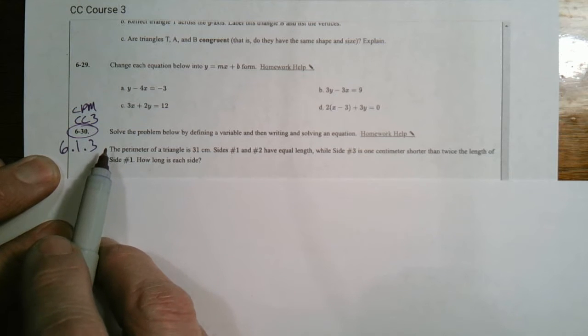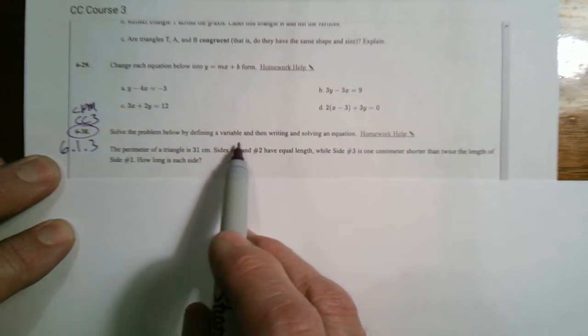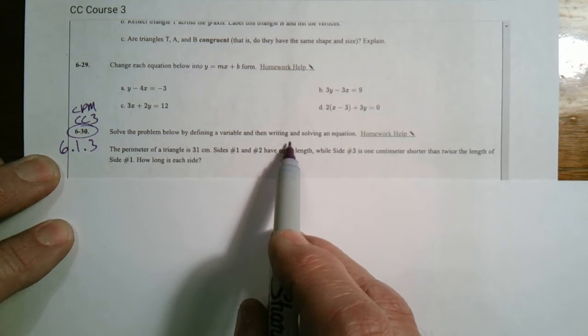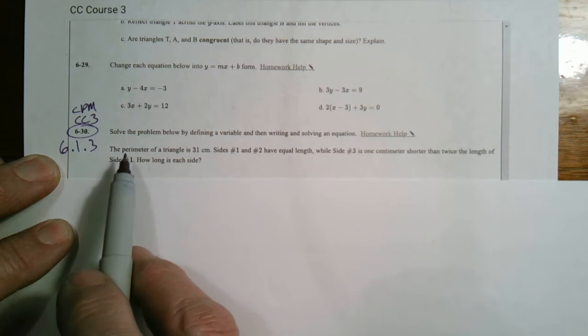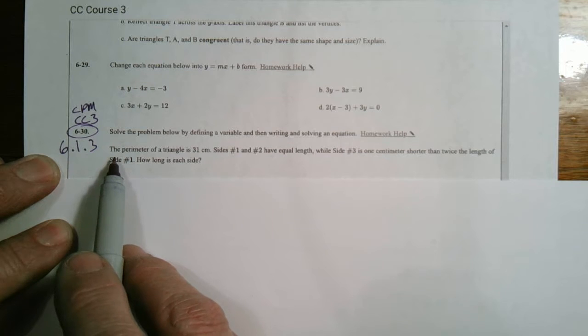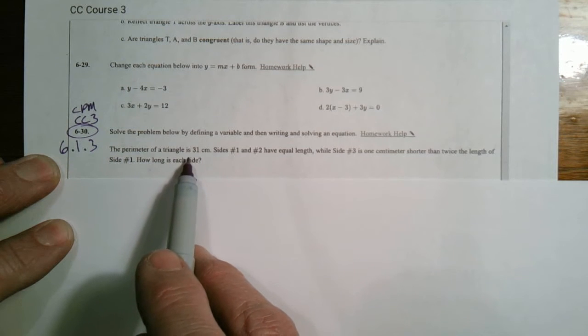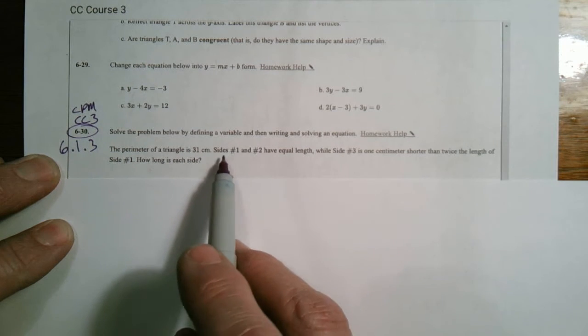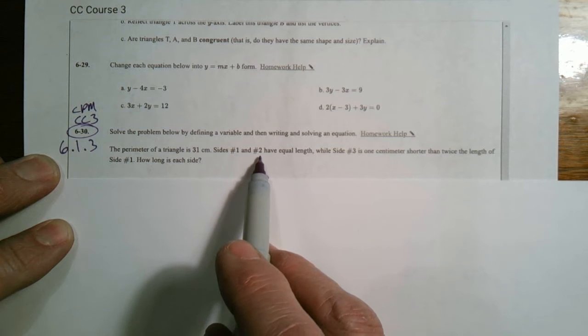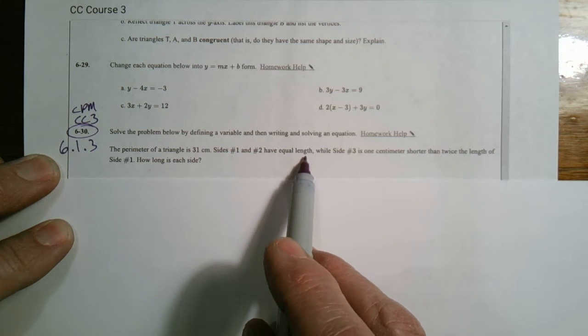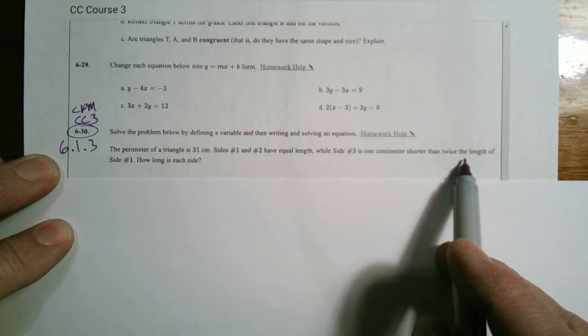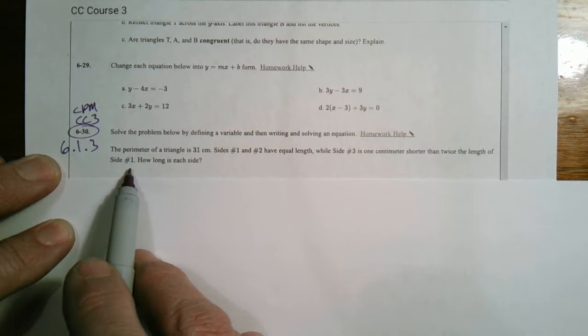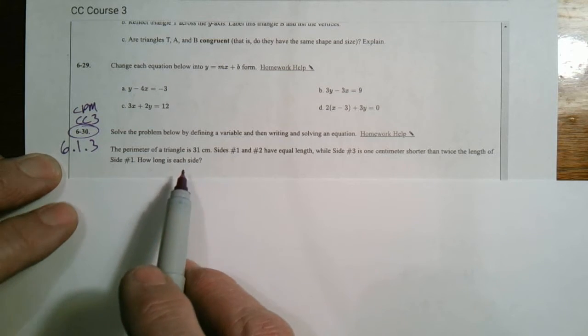So here's the problem. It says solve the problem by defining a variable, then writing and solving an equation. So that's our directions. Here's the problem: The perimeter of a triangle is 31 centimeters. Sides 1 and 2 have equal lengths, while side number 3 is 1 centimeter shorter than twice the length of side 1. So how long is each side?